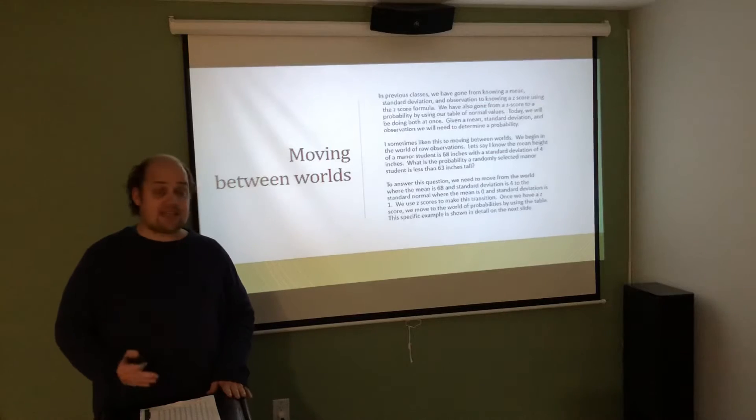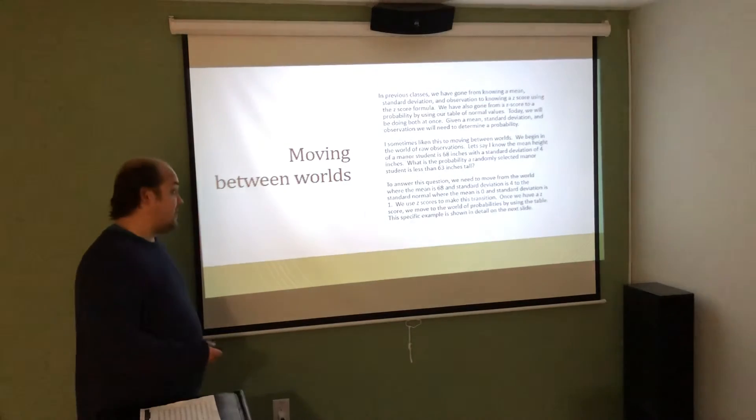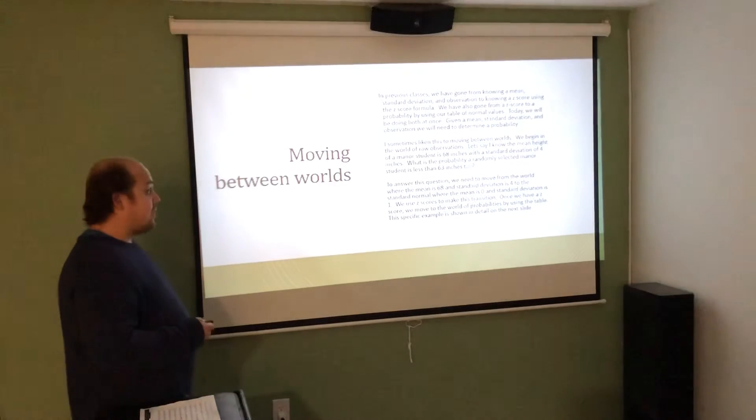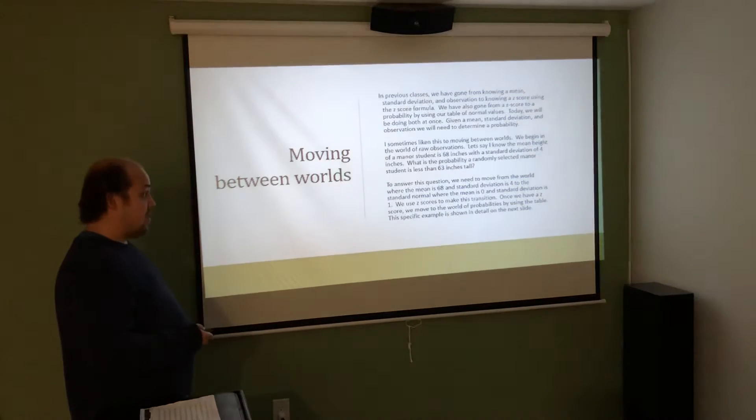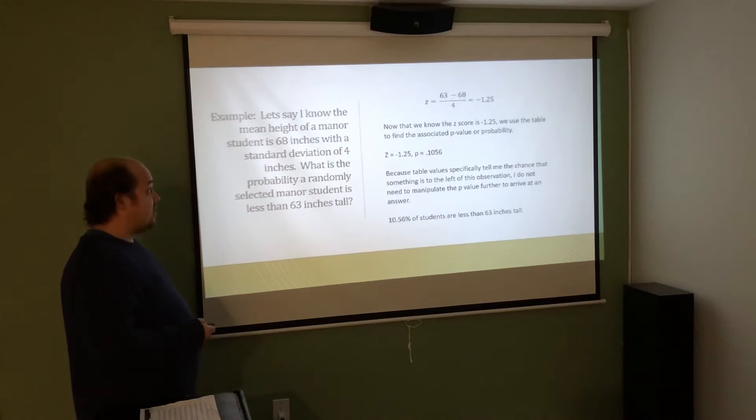So I have x, I have mu, and I have sigma. I can put them all into my z-score formula. So, once I use the z-score formula, then I can translate this into negative 1.25 as a z-score,